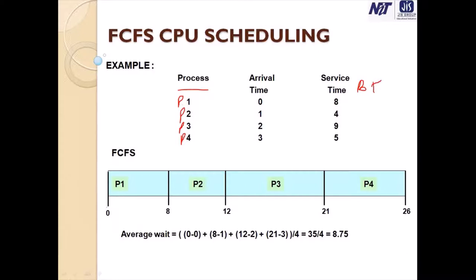For FCFS, we draw the Gantt chart. At 0 milliseconds, only P1 is in the ready queue, so P1 starts execution. Its burst time is 8, so P1 executes from 0 to 8 milliseconds. When P1 finishes, P2 is next — it arrived at 1ms with execution time 4. So P2 executes from 8 to 12 milliseconds. When P2 finishes, P3 is next with service time 9, executing from 12 to 21 milliseconds.